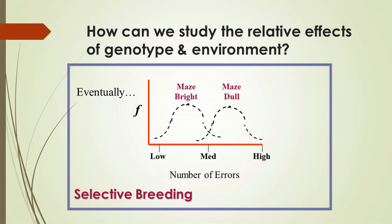Still other researchers replicated this experiment but also manipulated the environment in which the rats were raised. Some maze bright and maze dull rats were raised in normal rat laboratory environments — not much going on, but other rats nearby and periodic handling. Some were raised in enriched environments with lots of toys, things happening, frequent handling and socialization. Still others were raised in restricted environments where they couldn't see any other rats, nothing ever happened, they had no toys, and were rarely handled.